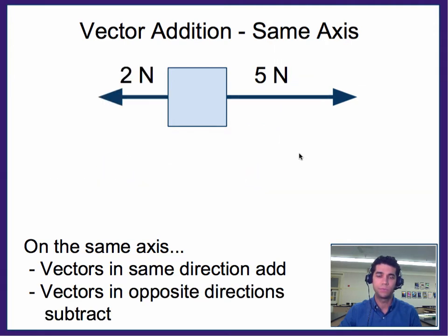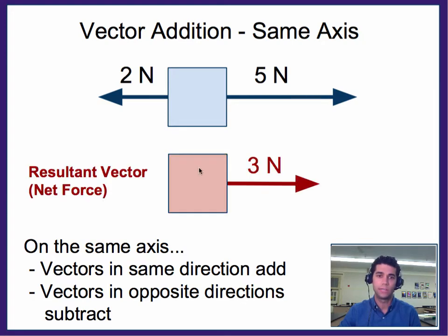Alternatively, if they were in opposite directions, the resultant vector or the result of their combination would result in a net force of three newtons in this case.